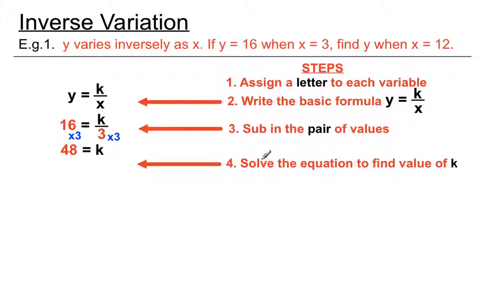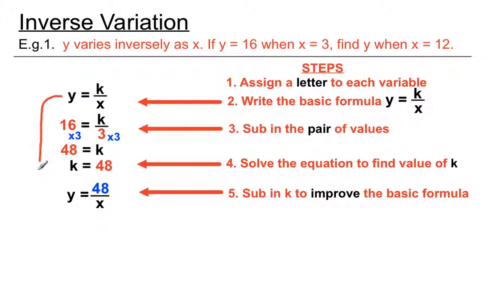Just as in the direct variation steps, we want to take that k and improve the formula by putting that 48 where the k was in the basic formula. So we've replaced that k that we didn't know before with the 48 that we now know.